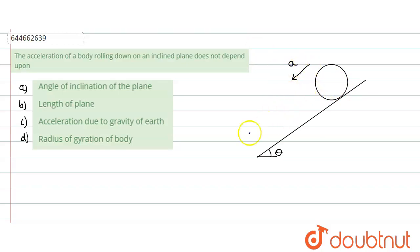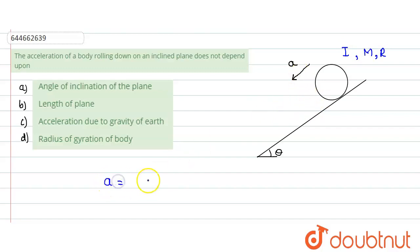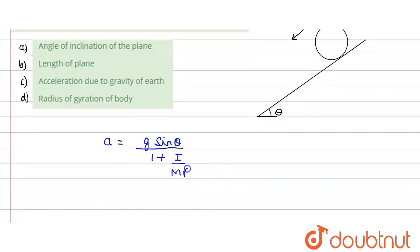Let's say this acceleration value is 'a'. The standard formula for this type of problem: if the body has a moment of inertia I, mass m, and radius r, then acceleration equals g sine theta divided by 1 plus I divided by mr squared. This is the standard formula which we should learn.